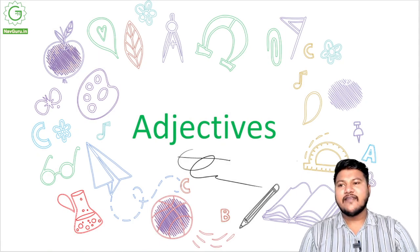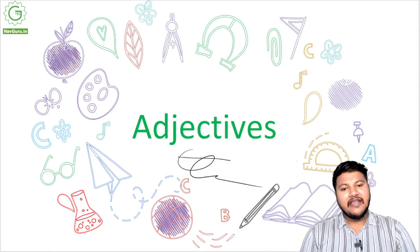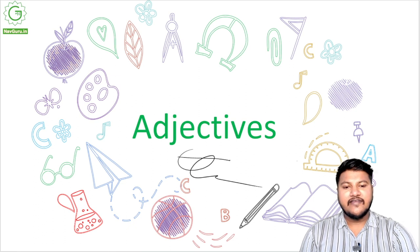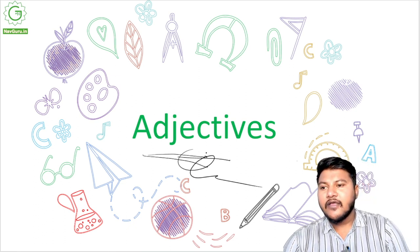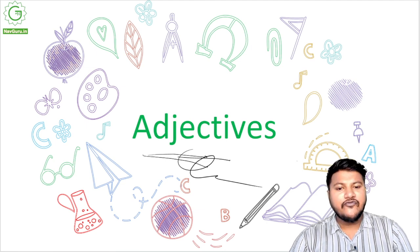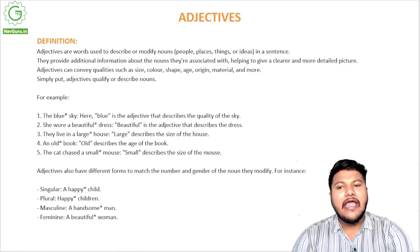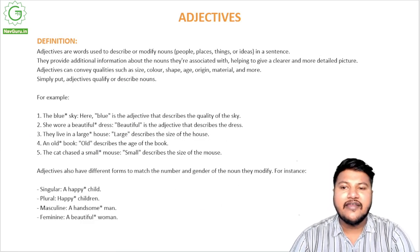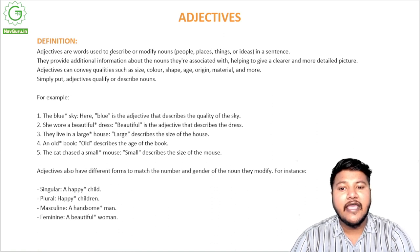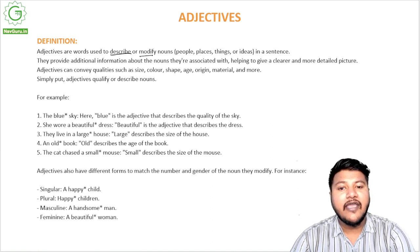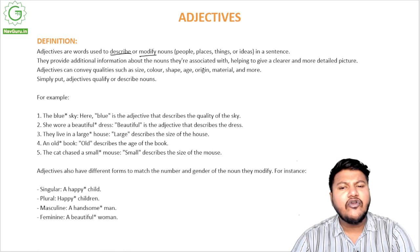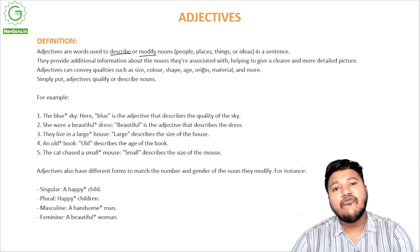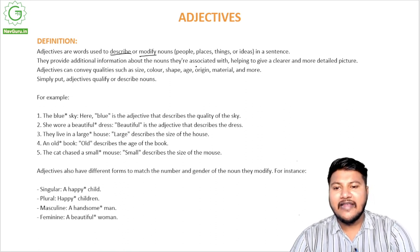Hello kids, so today we are starting with a new chapter — adjectives. What are adjectives? Adjectives are basically words that are used to describe or modify nouns — people, places, things, or ideas. In a sentence, whenever a noun is used and you need to describe or modify it, we use adjectives.